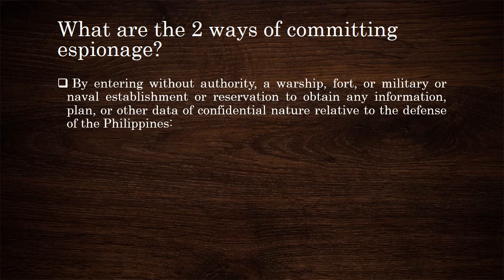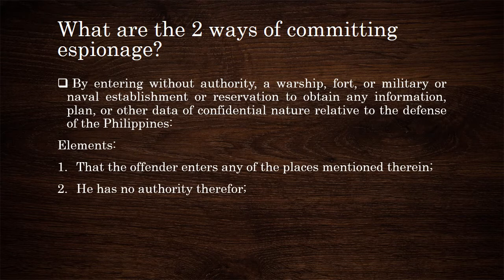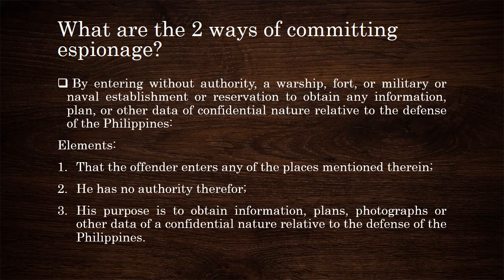What are the elements of this first way of committing espionage? Number one, the offender enters any of the places mentioned — a warship, fort, or military or naval establishment or reservation. Outside of those places, there can be no espionage. Number two, the offender has no authority to enter any of the places mentioned. Number three, the purpose of the offender is to obtain information, plans, photographs, or other data of a confidential nature relative to the defense of the Philippines.